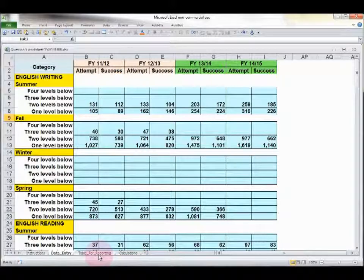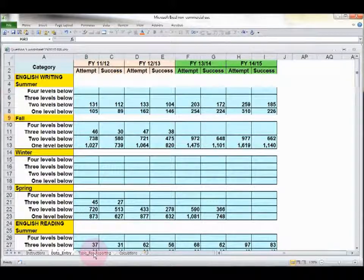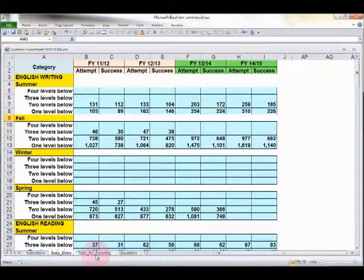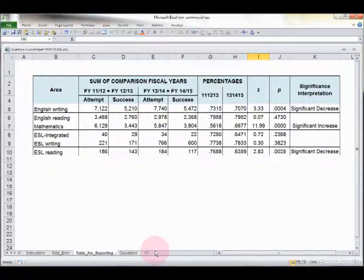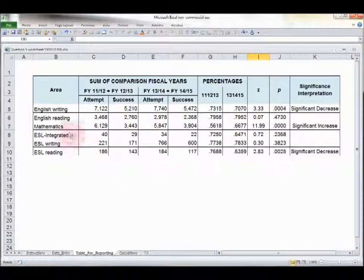Once you've put the data in, the remainder of the functions are automatic. If you go to the tab called Table for Reporting, you'll see a table that actually can be copied directly into question five. These are the data we're looking for, and this is the analysis we're looking for. Here's the six categories again: English Writing, Reading, Mathematics, ESL Integrated, ESL Writing, ESL Reading.